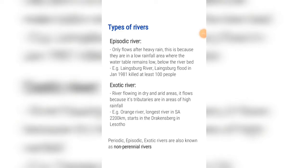Exotic rivers flow in dry and arid areas. The only reason these rivers are able to flow in dry areas is because their tributaries are in areas of high rainfall. The tributaries receive water and flow into the river, keeping it flowing even through dry and arid areas. An example is the Orange River — it's the longest river in South Africa, 2,200 kilometers long, and it starts in the Drakensberg in Lesotho. Periodic, episodic and exotic rivers are also known as non-perennial rivers.